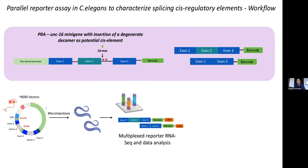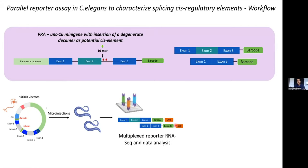Many such reporters can be constructed — we had a library size of 4,000 vectors with unique cis element and barcode pairs. These were injected into C. elegans, RNA was recovered, RNA-seq was performed, and then I performed data analysis. I count the different isoforms originating from different reporters, plug them into the percent exon inclusion formula, and calculate the splicing species in the total isoform population.